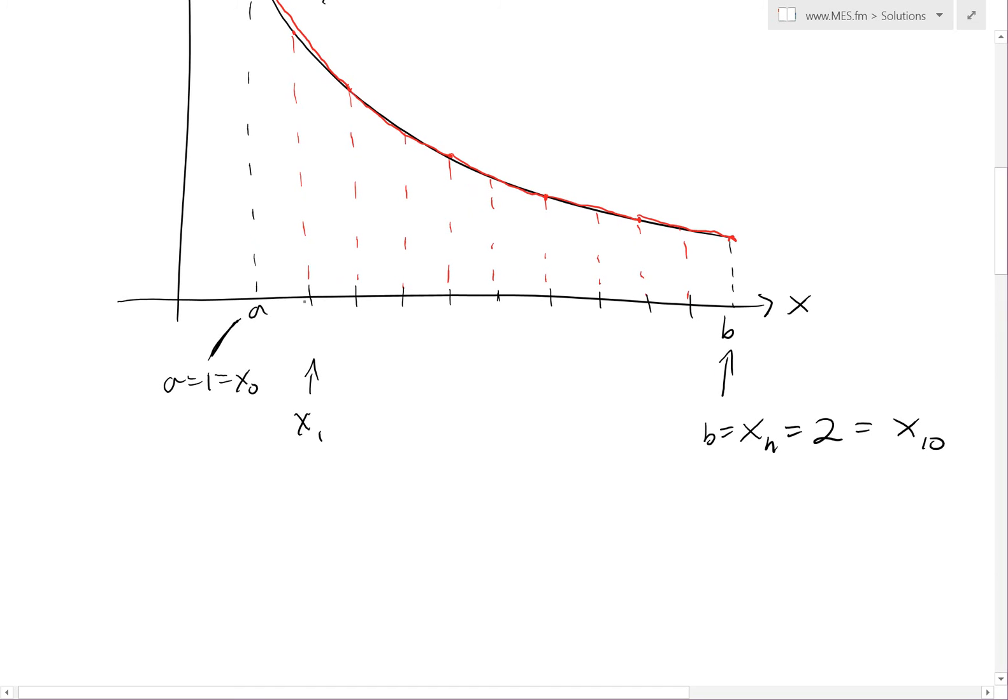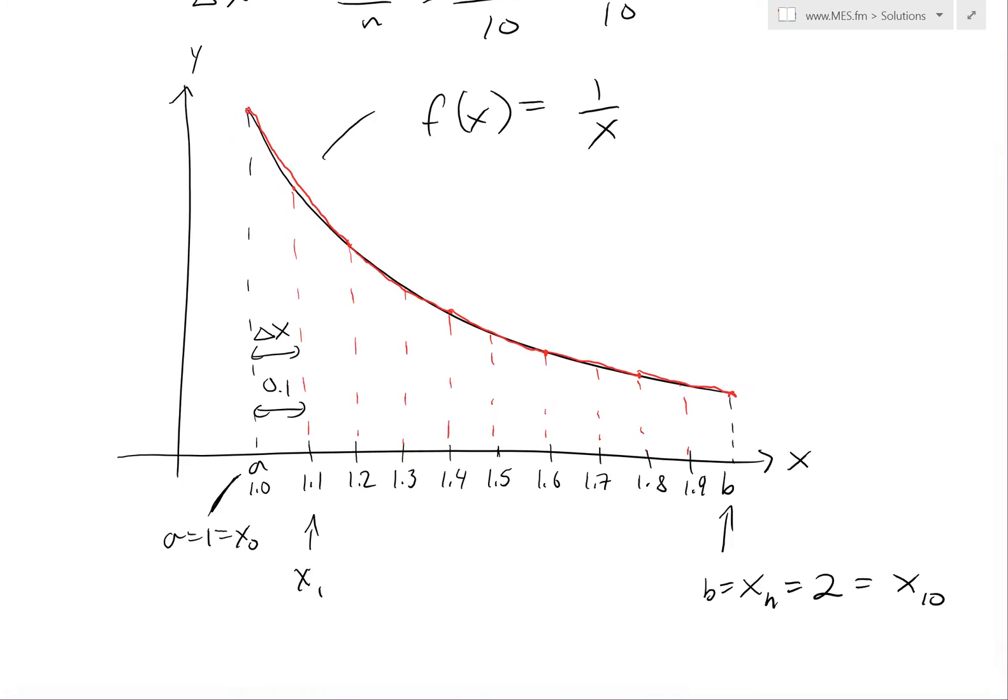a is also equal to x_0, and this is x_1 right here, goes all the way up to here. This is b equals x_n, in this case equals 2, which is x_10. The first point, they're all separated by 0.1, that's the delta x. So the first point here is 1.0, this is 1.1, 1.2, they're all separated by 0.1. 1.6, 1.7, 1.8, 1.9. This one here is x_9, and it follows the exact same pattern.